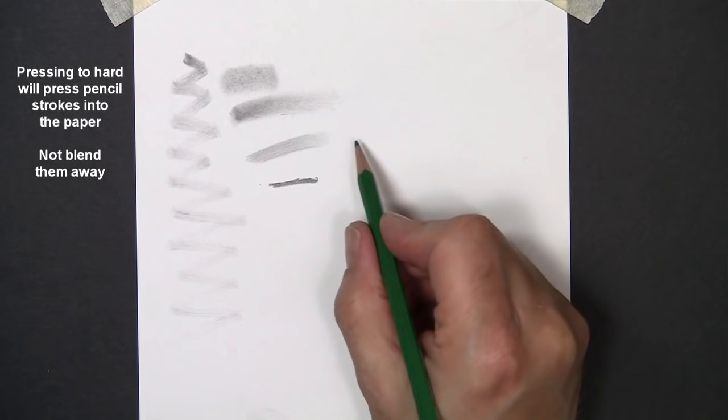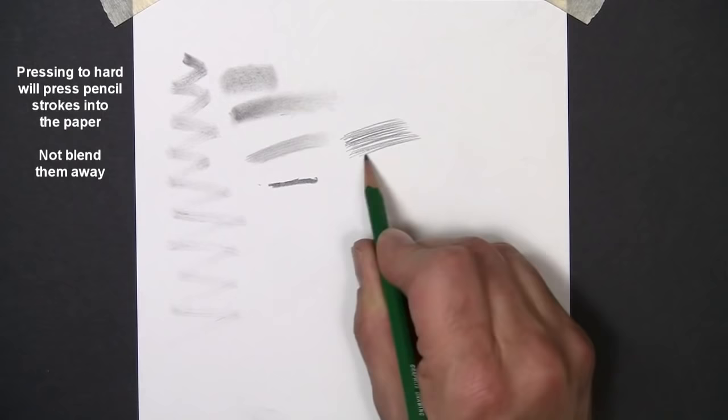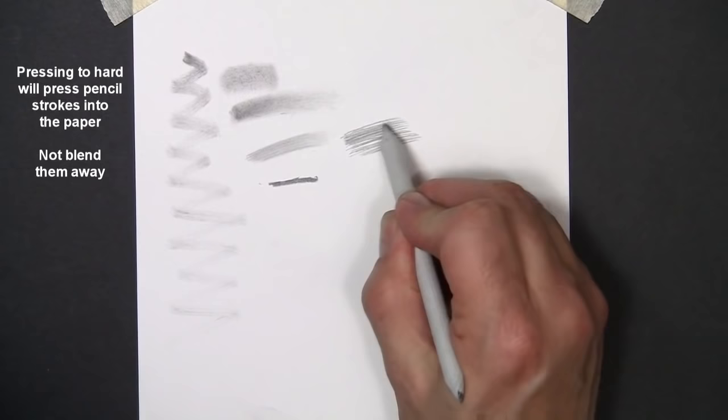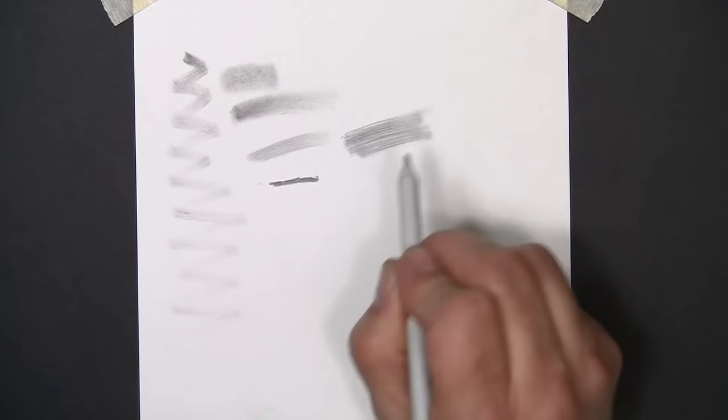I'll just show another little example here of the pencil lines next to it. Separate them a little so this will be easy to see. Now, if I'm going to push really hard with this stump here, they don't tend to blend out as well. I'm just grinding those darker lines into the paper, and you also end up with start and stop marks too. So, use a light touch.